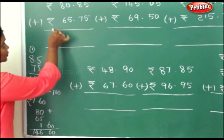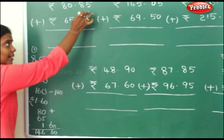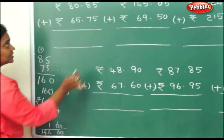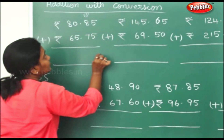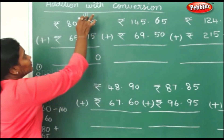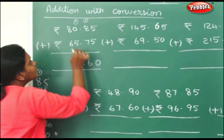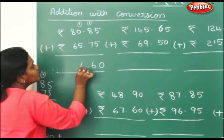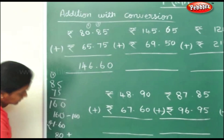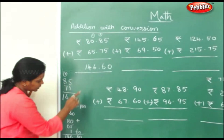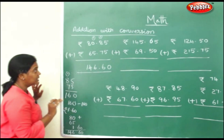Now this is one method of converting and adding. I will now do the same thing by simple addition — you will get the same answer. 5 plus 5 is 10. 9 plus 7 is 16. 5 plus 1 is 6. 8 plus 6 is 14. You have got the same answer — whether you convert or not, you get the same answer.